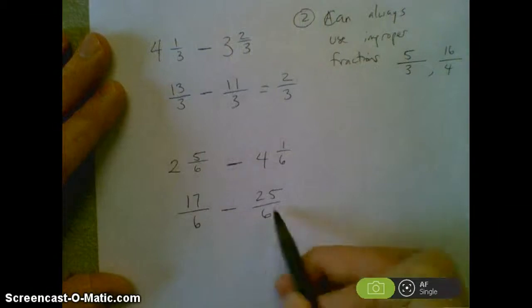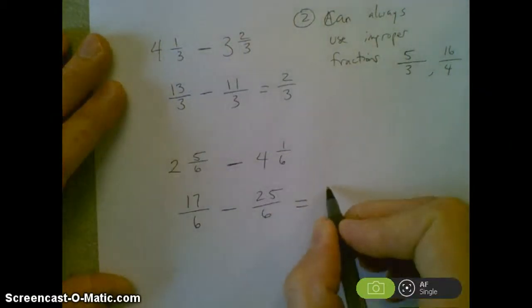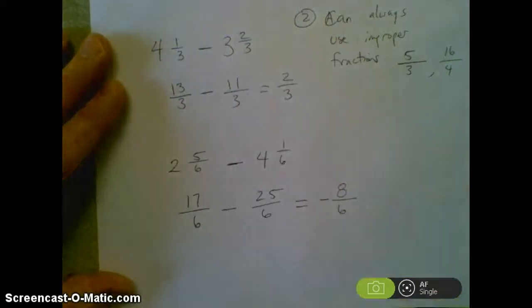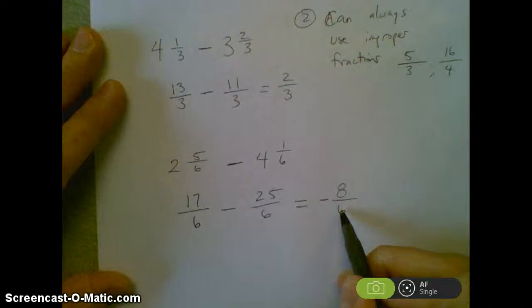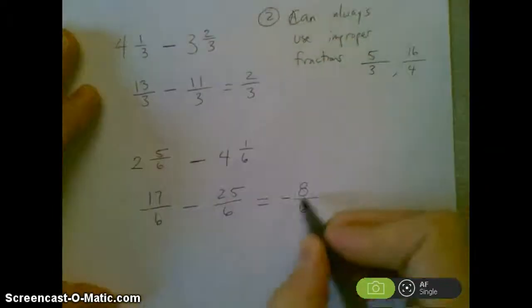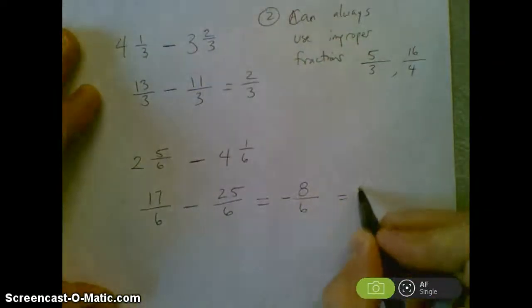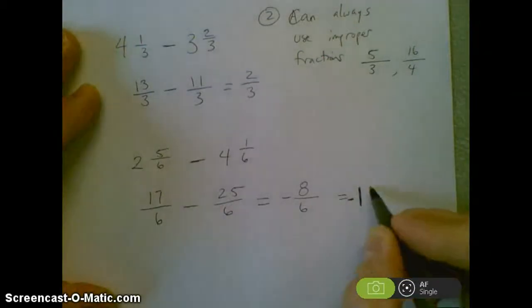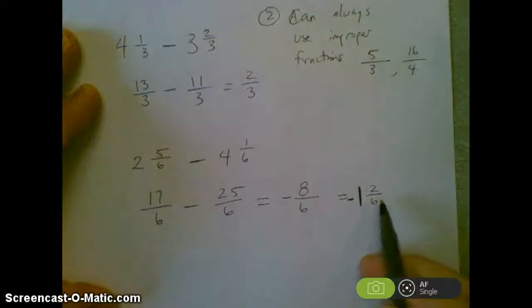So 17/6 minus 25/6 equals a negative 8/6. Now I can take that negative 8/6 and convert it to a mixed number, because it's an improper fraction. 6 goes into 8 one time, and I'm left with a remainder of 2/6. So negative 1 and 2/6,